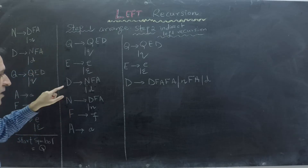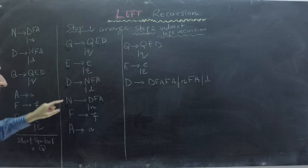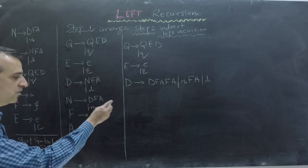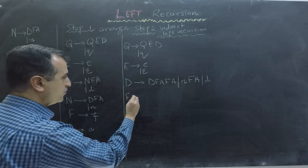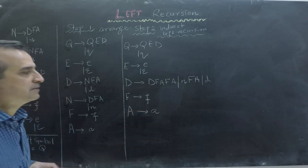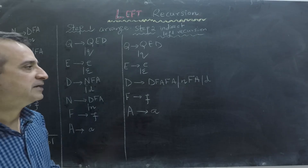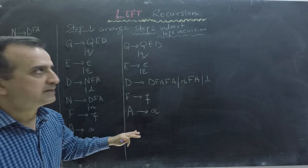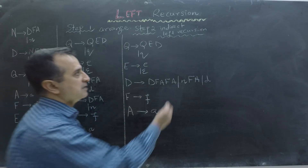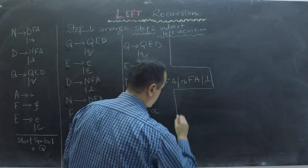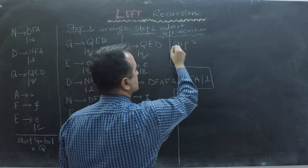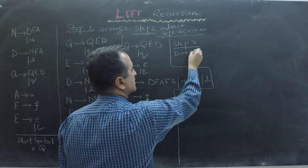Now notice that N is not reachable from the start symbol anymore, because from D we cannot go to N and we cannot reach N by any other means. So we don't need to write N anymore since it is now unreachable. We keep F goes to small f and A goes to small a. This is our new context-free grammar where we have no indirect left recursion — only direct left recursion. The last step is to remove direct recursion.